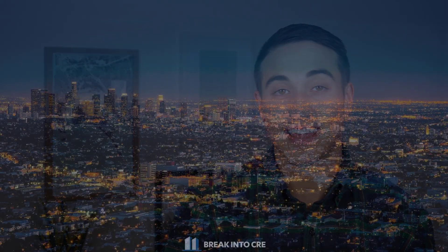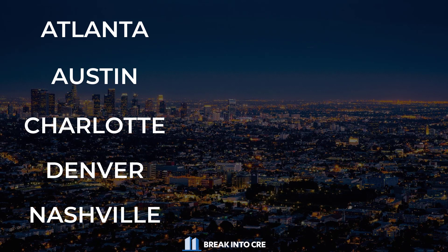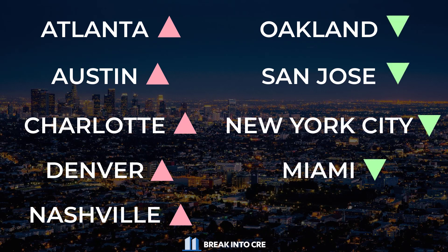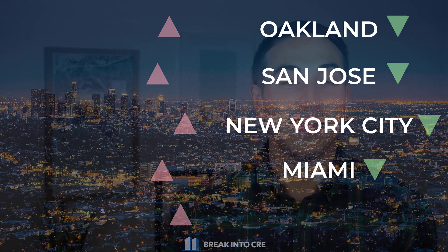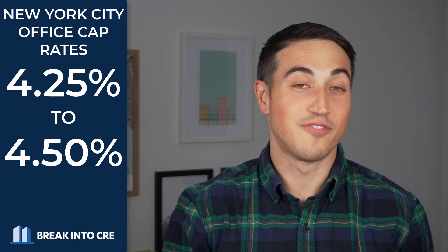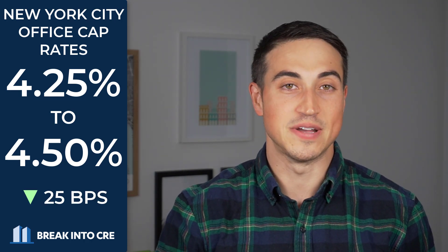Lower cost tax-friendly cities like Atlanta, Austin, Charlotte, Denver, and Nashville all actually saw cap rates increase over the last year, decreasing property values comparative to NOI values, while expensive coastal cities like Oakland, San Jose, New York City, and Miami all saw slight cap rate decreases from a year ago, increasing property values comparative to NOI values. So while the media is talking about companies leaving big cities, office investors seem to be making bets on office coming back stronger than ever, with even New York City seeing office properties trade at cap rates of 4.25% to 4.5% over the summer, down a full 25 basis points from one year prior.